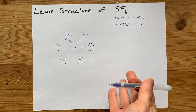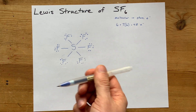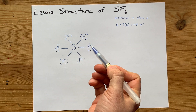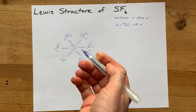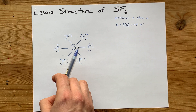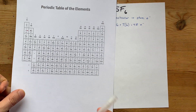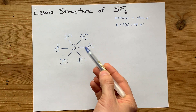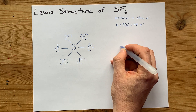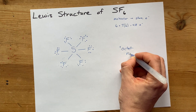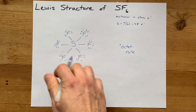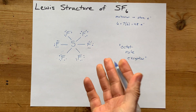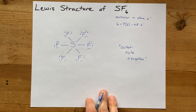The final step is that if the octet on the central atom is not yet complete, you're going to have to move some lone pairs to become double or triple bonds. However, sulfur is an exception to the octet rule — it can actually accommodate up to 12 valence electrons, also known as 6 bonds, which is what we have here. Sometimes it has 8, sometimes 10, and sometimes up to 12. It is what we call an octet rule exception.